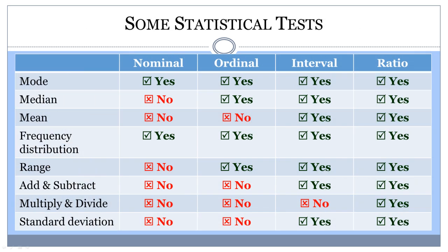The level of measurement dictates the appropriate statistical tests that can be used. One of the reasons for learning about levels of measurement is so you know what statistical tests can be performed on different types of data. That way you can avoid making mistakes in your own work and critique the work of others. Be aware that some people gather ordinal data and treat it like interval data once numbers are assigned to it. Researchers need to be careful not to make interval and ratio claims about ordinal data, and not to claim that something is twice as much as something else if the data were not collected at the appropriate level.